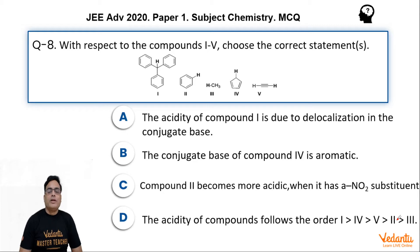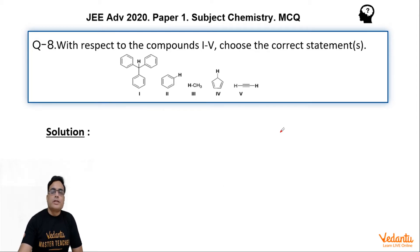Let us check one by one. First statement is the acidity of compound is due to delocalization in the conjugate base. Let us check what is the conjugate base of this compound. This is triphenylmethane. So conjugate base of this triphenylmethane is where you remove this H+, and you find that this C- negative charge is delocalized on the three phenyls one by one, because phenyls are free to rotate.